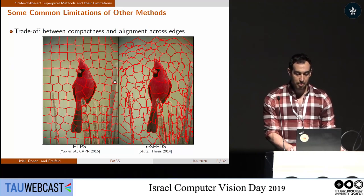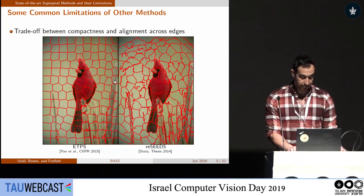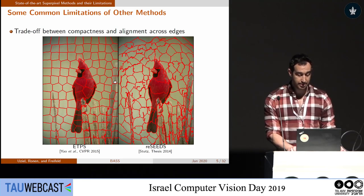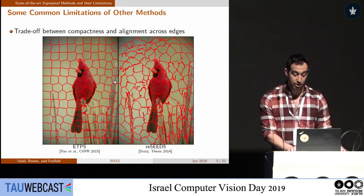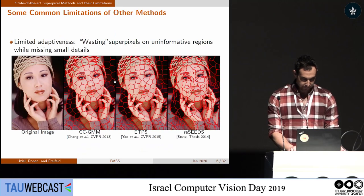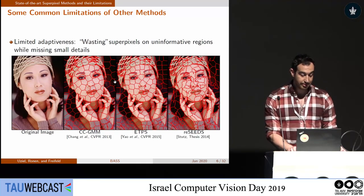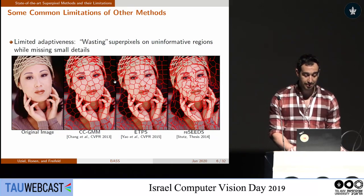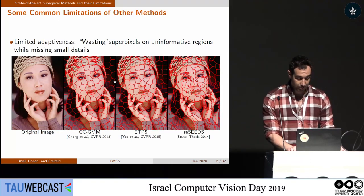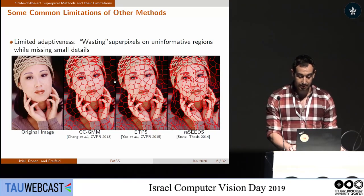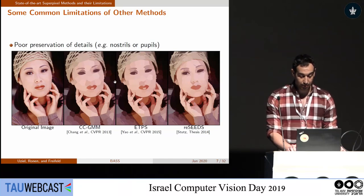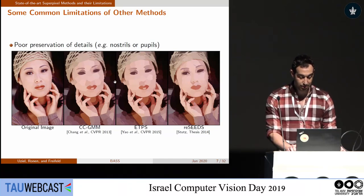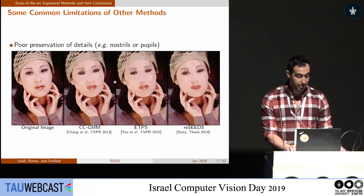Another common trade-off is between compactness and alignment across edges. On the left we can see nicely looking superpixels that are not well aligned across edges, compared to the right where we have a lot of irregular boundaries. Perhaps the biggest limitation of other methods is limited adaptiveness — there are too many superpixels in a completely homogeneous area like the woman's hair, and not enough in informative regions. Looking at the mean image, we can hardly figure out the nostrils or the pupils.